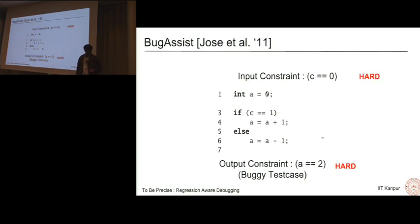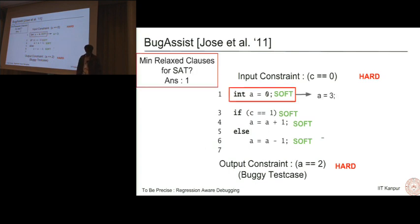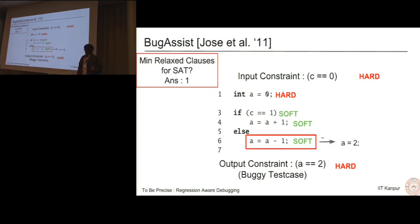We use partial MaxSAT on this problem. We make the input and output constraints as hard. We cannot relax them, which means we cannot modify them. It would be stupid to modify the input output. But we make the program statements themselves as soft. We can actually make modifications in that. After giving it to a partial MaxSAT solver, we get the answer as 1. It says that the first particular statement can actually be relaxed. It just changed a = 0 to a = 3 and then the program started passing. But there might be some other solutions. So we make the statement which was found earlier as hard, so we cannot modify this anymore. This time it returns a = a - 1. It says you replace it by a = 2.